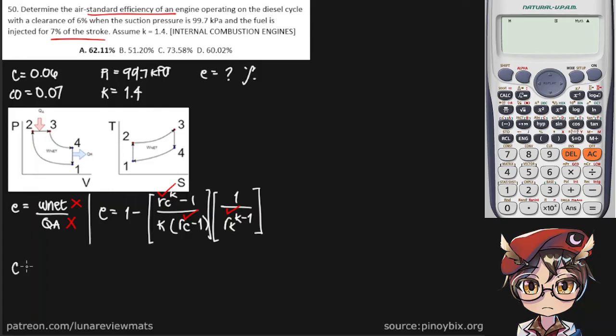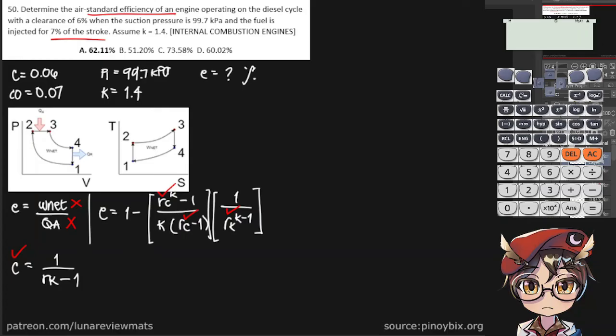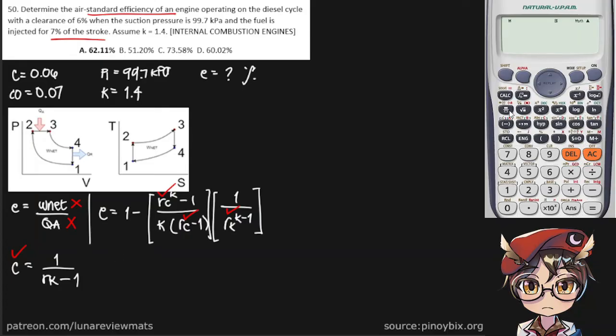We know that C, or clearance, is equal to 1 over R sub K minus 1. We know our C, so we can just directly substitute that in our calculator. It's 1 over 0.06. 1 over R sub K minus 1, and we get an R sub K of 17.67.